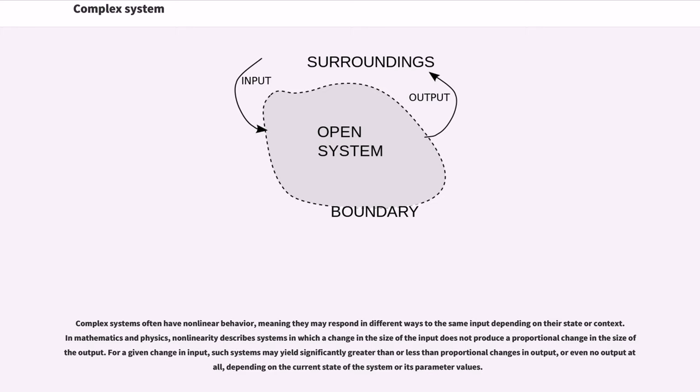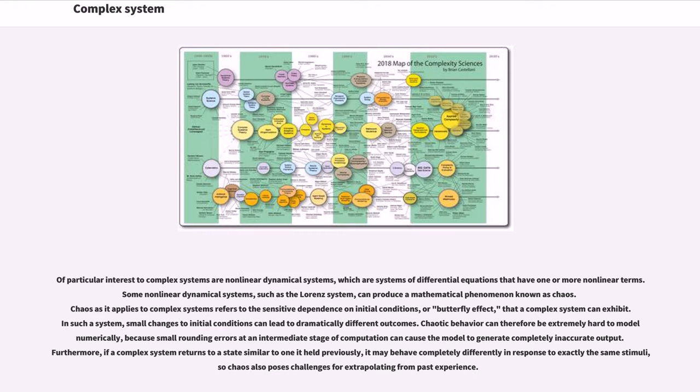For a given change in input, such systems may yield significantly greater than or less than proportional changes in output, or even no output at all, depending on the current state of the system or its parameter values.